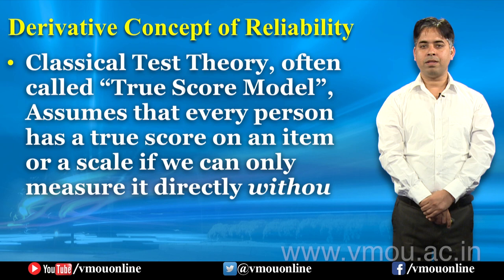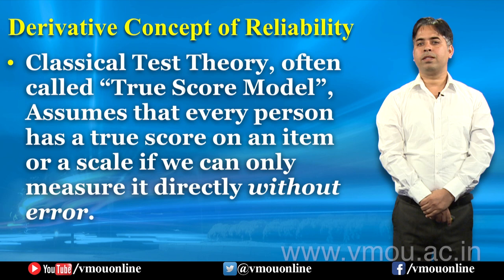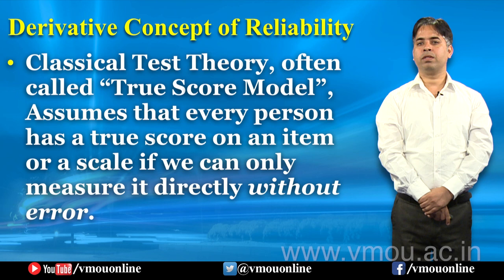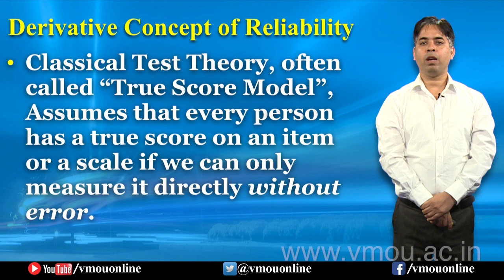सबसे पहले हम लोग Derivative Concept of Reliability को समझते वक्त Classical Test Theory के बारे में जानने की कोशिश करेंगे। Classical Test Theory, often called the True Score Model, assumes that every person has a true score on an item or a scale, if we can only measure it directly without error.